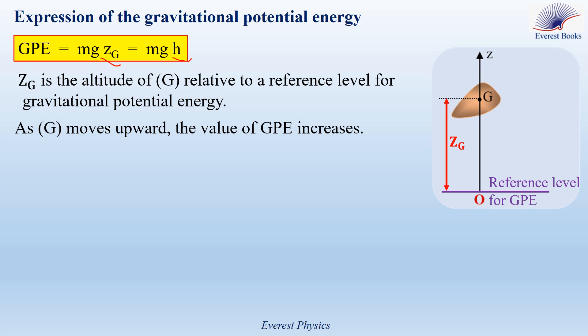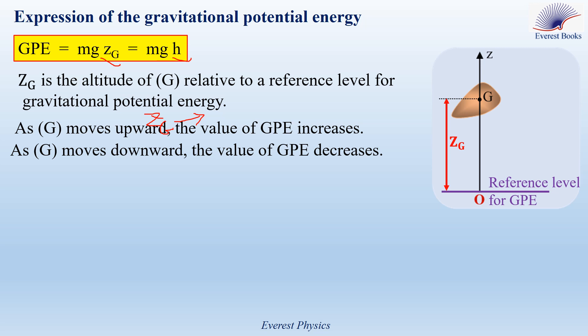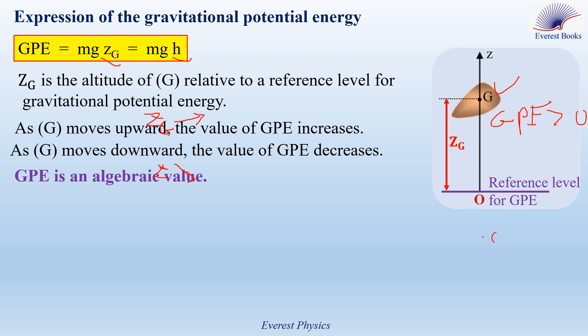As G moves up, Z_G increases, so the gravitational potential energy increases. Similarly, as G moves down, Z decreases, so the gravitational potential energy decreases. GPE is an algebraic value — it could be either positive, negative, or zero, depending on the position of the center of mass. If the center of mass is above the reference level, then GPE is greater than zero. If G is below the reference level, then GPE is negative.